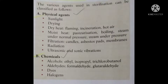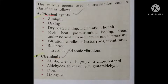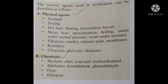There are various means for sterilization, broadly classified into two categories: physical agents and chemical agents. Physical agents include sunlight, the drying method, the dry heat method — which uses flaming, incineration, and hot air oven — and the moist heat method, which includes pasteurization, boiling, steam under normal pressure, and steam under pressure, as well as filtration.